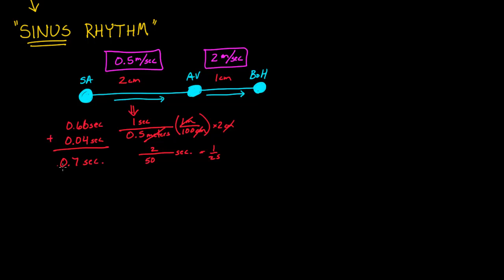So far, the signal has gotten here in 0.7 seconds. I'm just going to write that in yellow because this is the SA node signal. 0.7 seconds. Wow, that's really fast. Really fast.